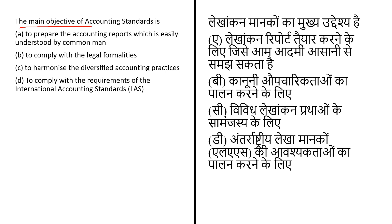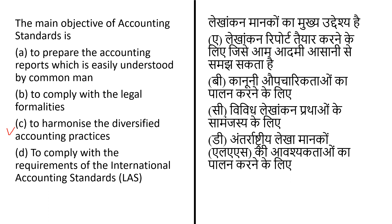The main objective of accounting standard is — options: (A) to prepare accounting reports easily understood by a common man, (B) to comply with legal formality, (C) to harmonize the diversified accounting practices, or (D) to comply with the requirements of international accounting standards. Accounting, known as the language of business, measures the result of an organization's economic activity and conveys this information to stakeholders including investors, creditors, management, and regulators. The correct answer is option C — to harmonize the diversified accounting practices.